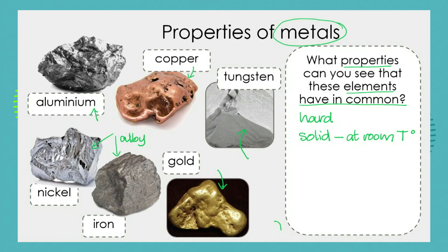Most of these elements are in fact shiny. Some of them are more shiny than others — we can see for example that nickel is far more shiny than tungsten — but they have a property known as shine, and the fancy word for that is they are lustrous.